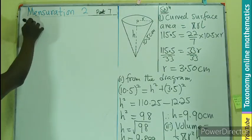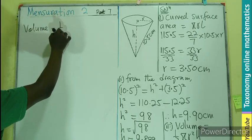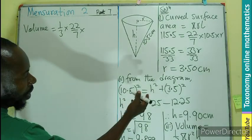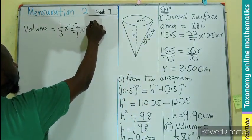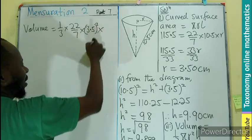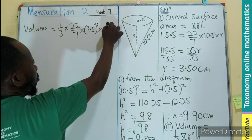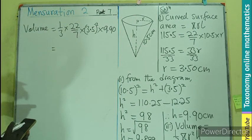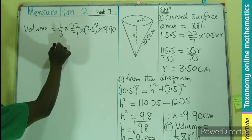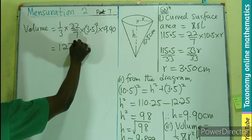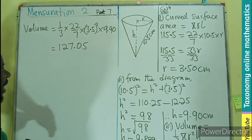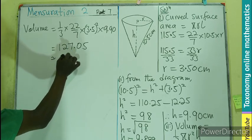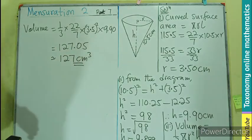So our volume will be equals to 1/3 times 22/7, our R we found it to be 3.50 squared times the height which is 9.90. So this when computed will give us 127.05. But we are leaving the answer in three significant figures. So 1, 2, 3, that means that we have 127 cm³ as the volume of this cone.